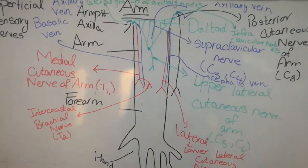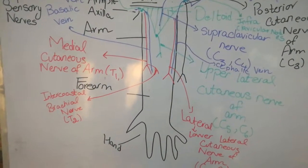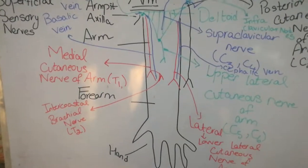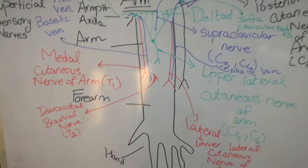Alright guys, now the next topic is about the veins of the upper arm and the lymphatic drainage of the upper arm. The veins of the upper arm are divided into two categories.